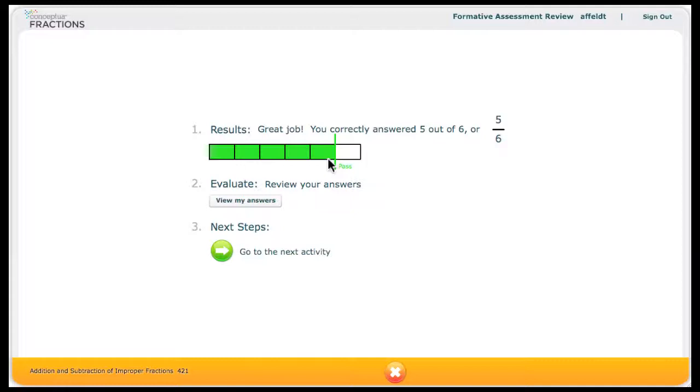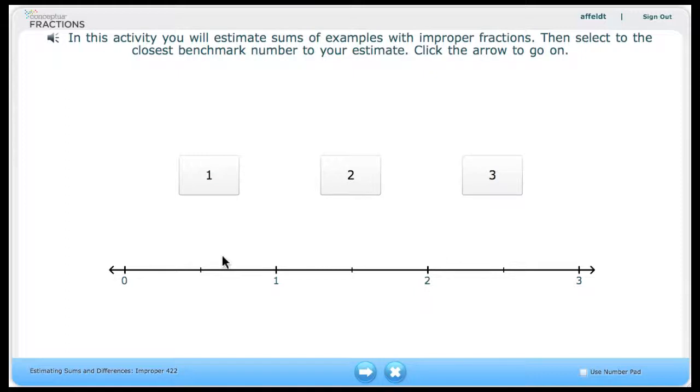The second section is the evaluate section. This allows students and their teacher to click on the view my progress button to go back and look at examples that were correct and incorrect. Finally is next steps. Sarah simply clicks to go to her next activity. If the student passes, they move on without any teacher involvement.